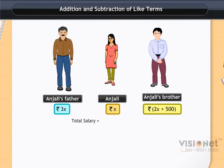For this, we simply need to add them. Note that we can add and subtract like terms. In case of addition or subtraction of like terms, only their numerical coefficients are added or subtracted. The algebraic part of the terms remains as it is.